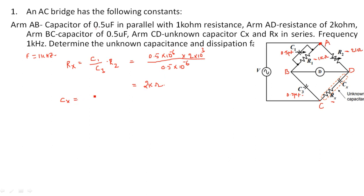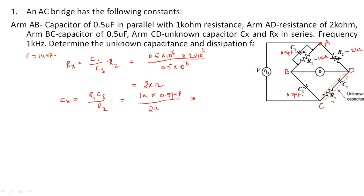For the unknown capacitance Cx, the formula is Cx = C3 × R1 / R2. Substituting: R1 = 1 kilo ohm, C3 = 0.5 microfarad, R2 = 2 kilo ohms. So Cx = (1k / 2k) × 0.5 = 0.5 × 0.5 = 0.25 microfarads.